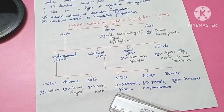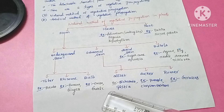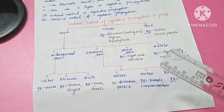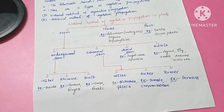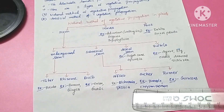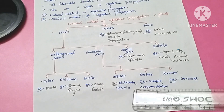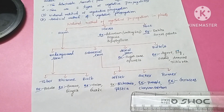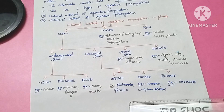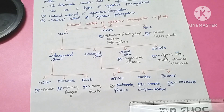Sub-aerial stems are not completely underground. Examples include offset, sucker, and runner. Offset is seen in Pistia and Eichhornia — these are hydrophilic plants growing on the horizontal water surface. At every node there are leaves and a bunch of roots. When the offset is cut, it develops into a new plant.